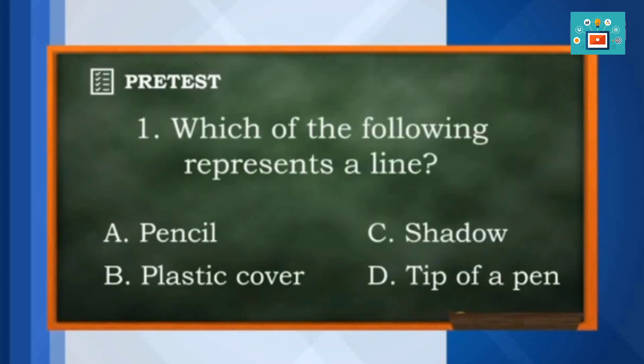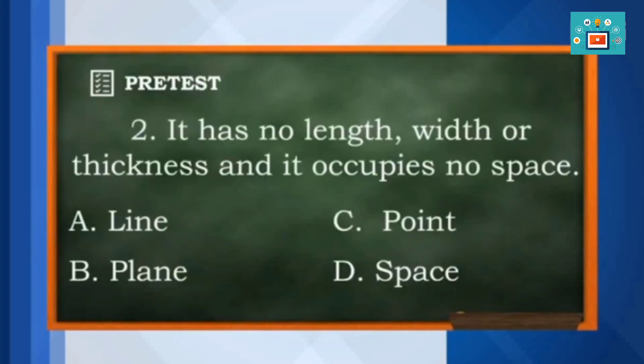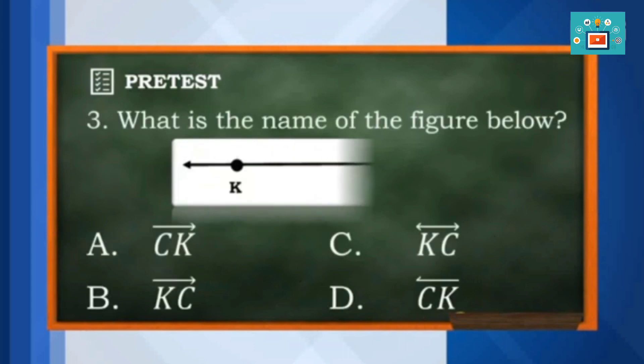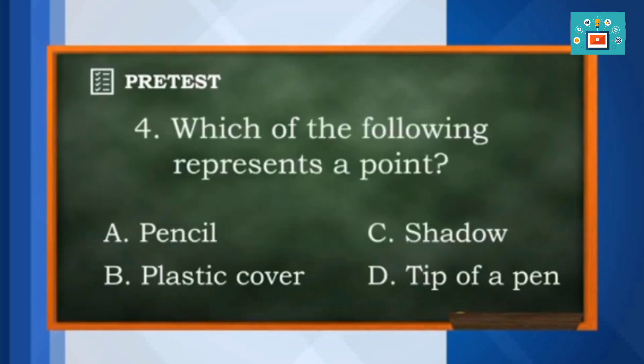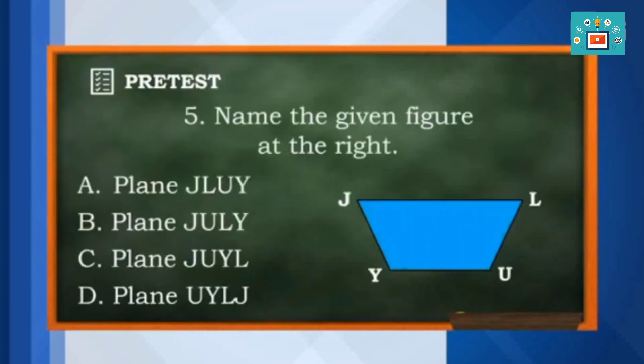Number 1. Which of the following represents a line? Number 2. It has no length, width, or thickness, and it occupies no space. Number 3. What is the name of the figure below? Number 4. Which of the following represents a point? Number 5. Name the given figure at the right.